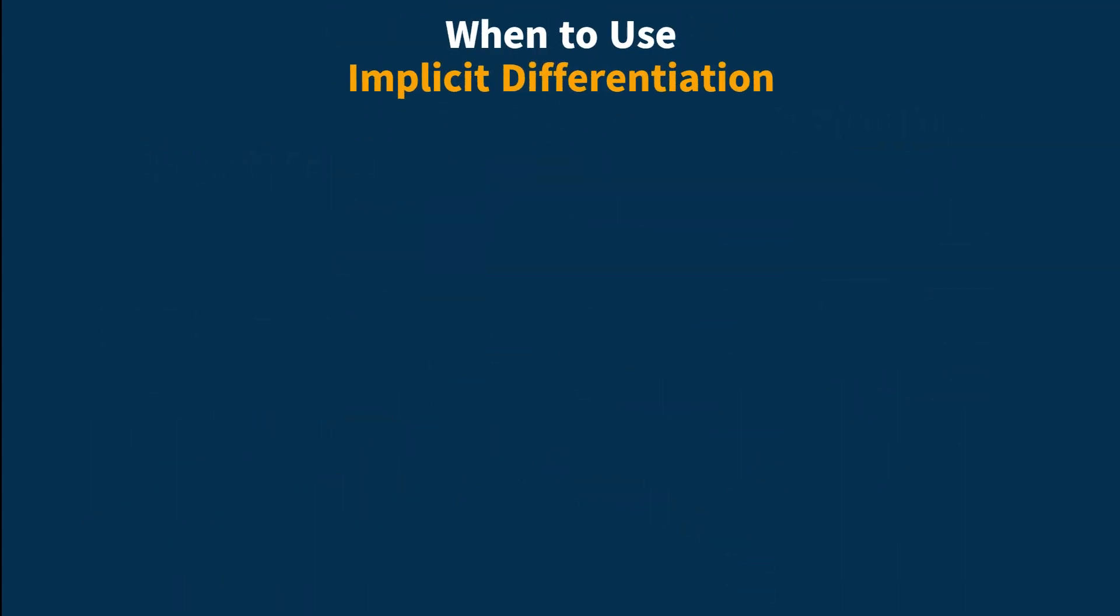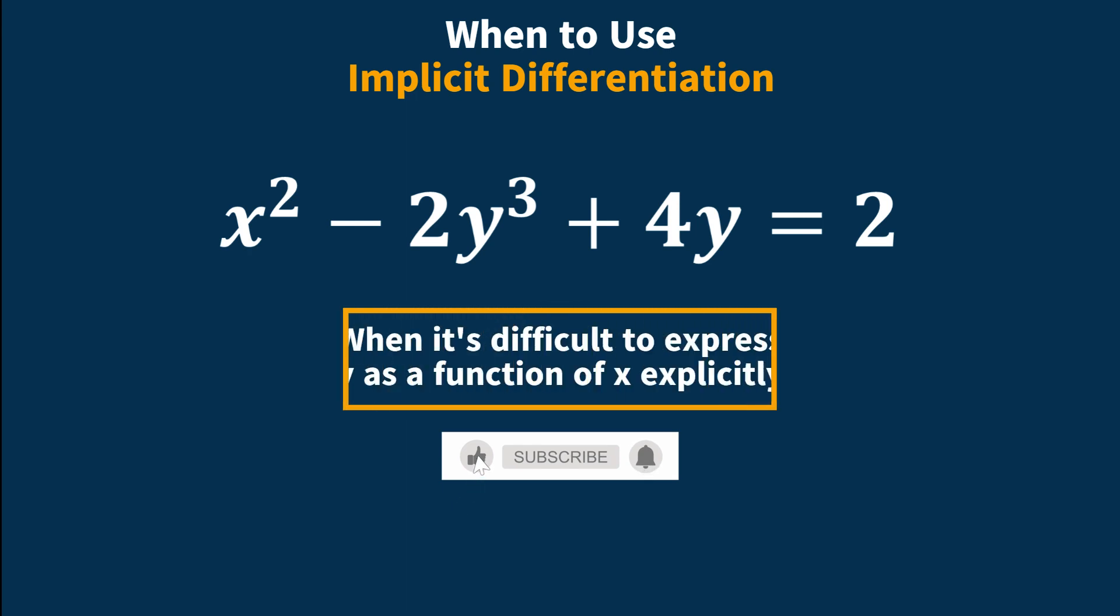When to use implicit differentiation. Let's look at this function here. It would be difficult to express y as a function of x explicitly. Whenever this is the case, we solve the problem by implicit differentiation.